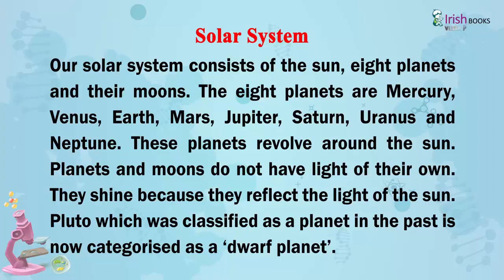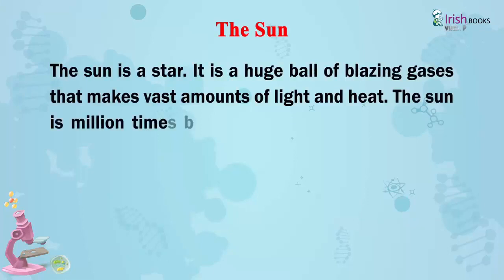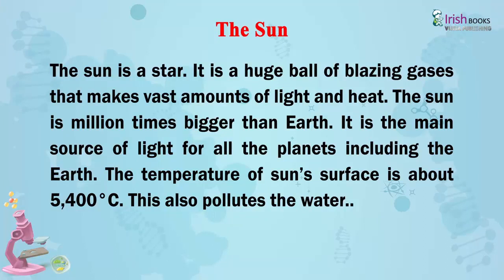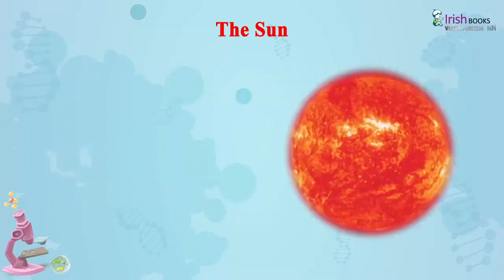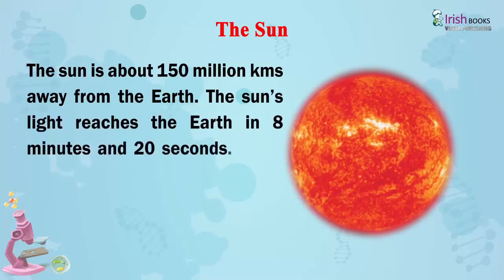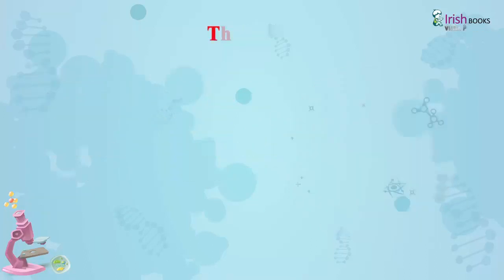Pluto, which was classified as a planet in the past, is now categorized as a dwarf planet. The sun is a star. It is a huge ball of blazing gases that makes vast amounts of light and heat. The sun is a million times bigger than Earth. It is the main source of light for all the planets including the earth. The temperature of the sun's surface is about 5400 degrees Celsius. The sun is about 150 million kilometers away from the earth. The sun's light reaches the earth in eight minutes and 20 seconds. There would be no life on the earth without the sun.